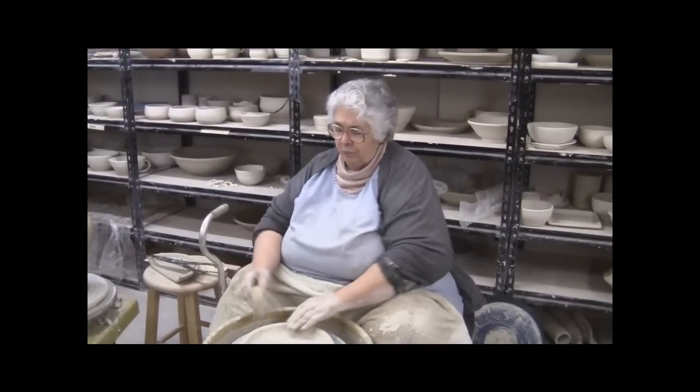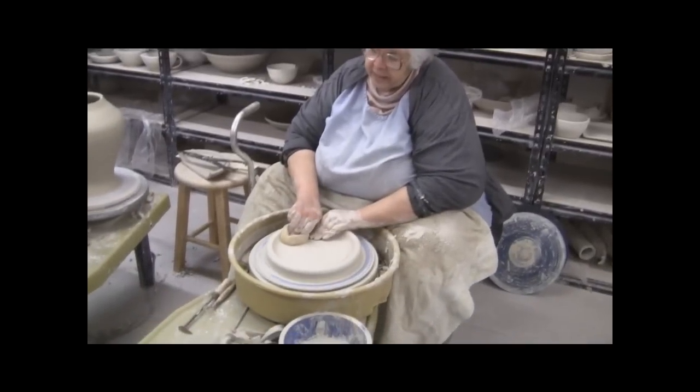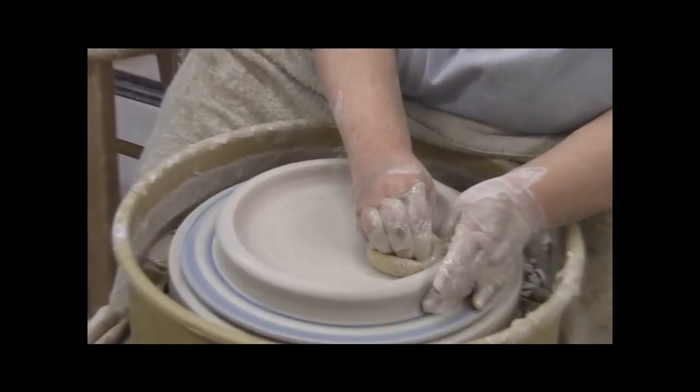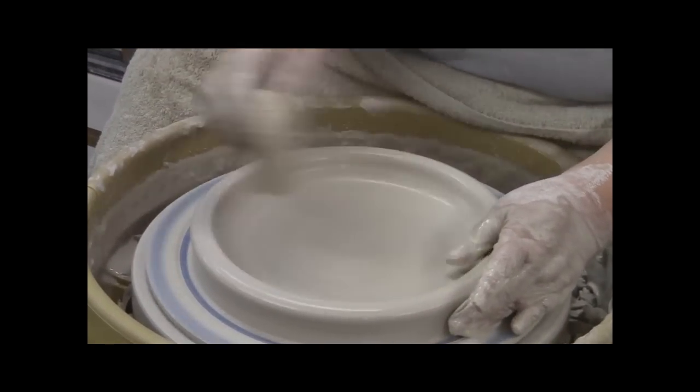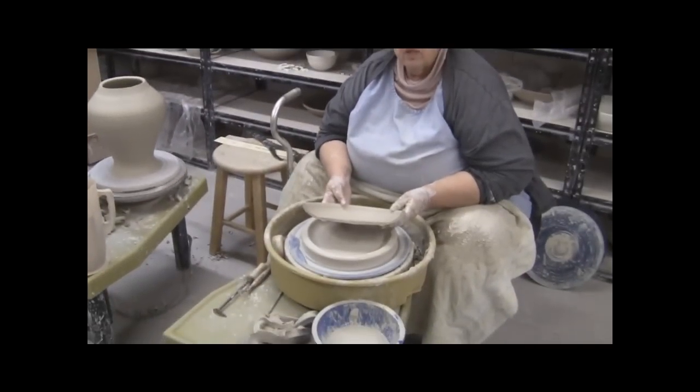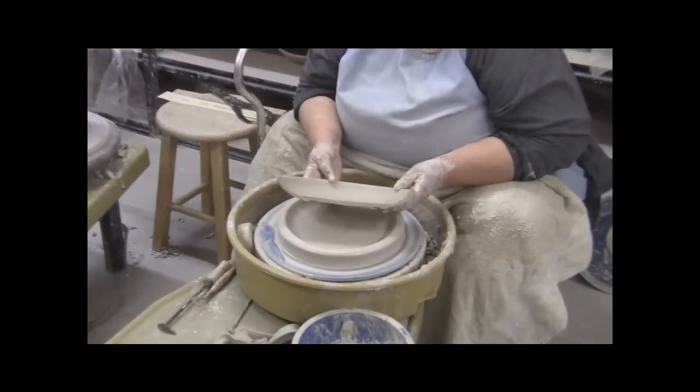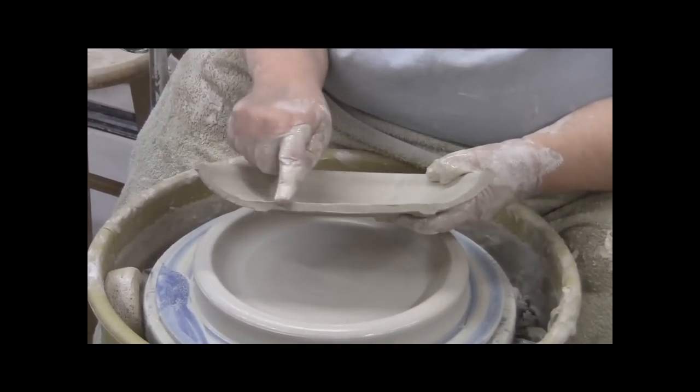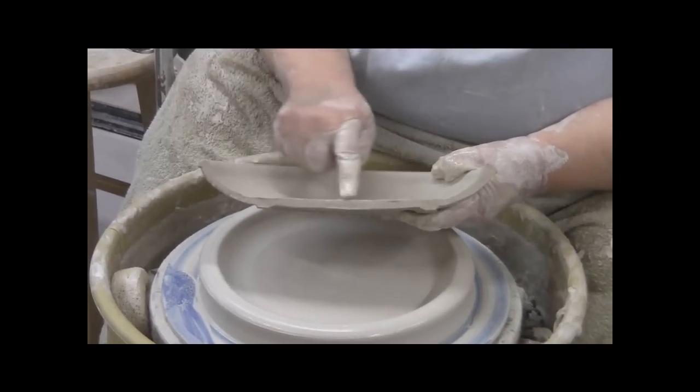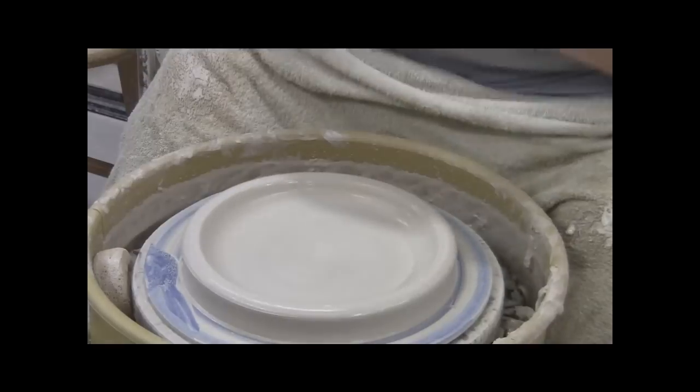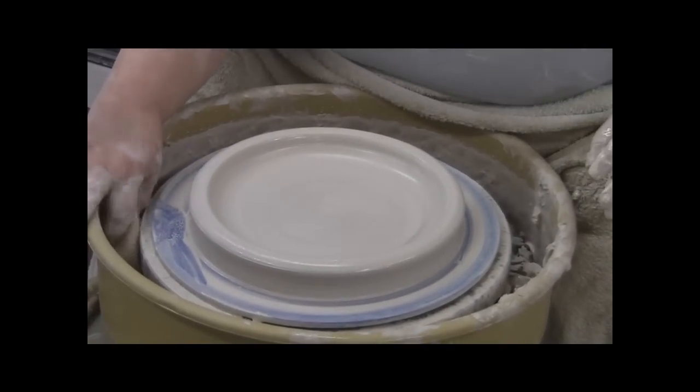Remember we said that every plate has a bowl and a rim. The significant thing about the coupe plate is that there's no distinction. There's no line between the bowl and the rim. All right, we're going to show you quickly one we made earlier. This is a coupe. This has been trimmed. And there's no significant change between the curve as it comes up from the base to the edge. It's a straight curve with no change in direction.